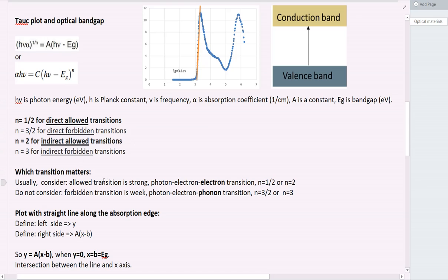And how to use this equation to determine the optical band gap? Then we need to have the optical absorption coefficient. If we could measure this experimentally, then we can plot with this. And then we have to decide which n should we use.